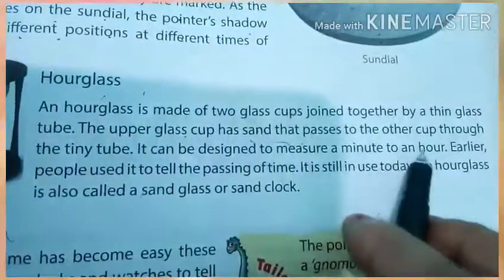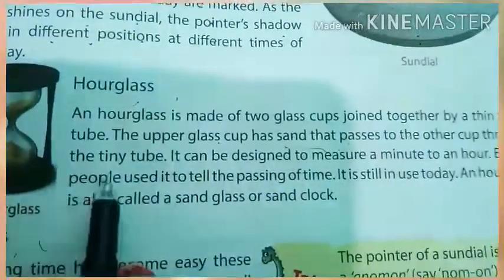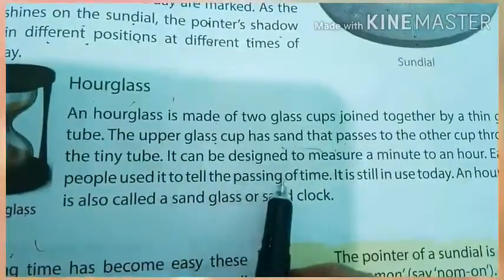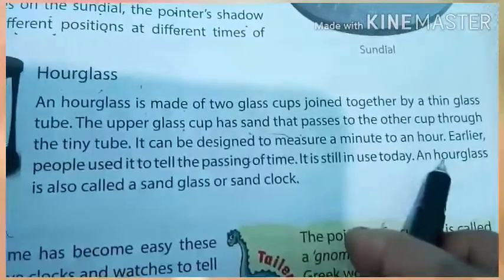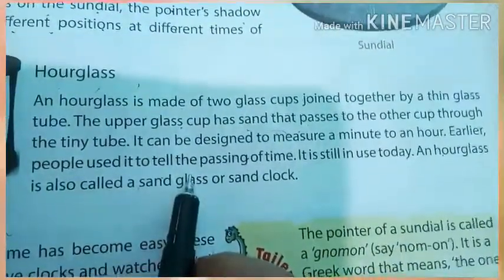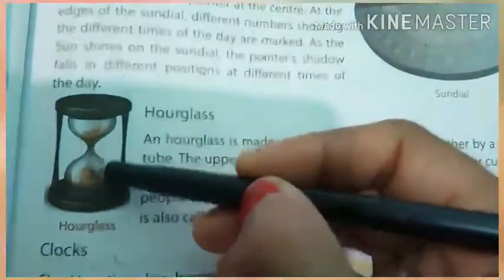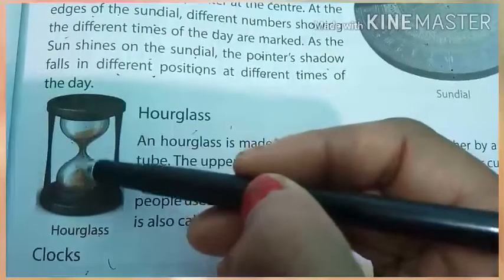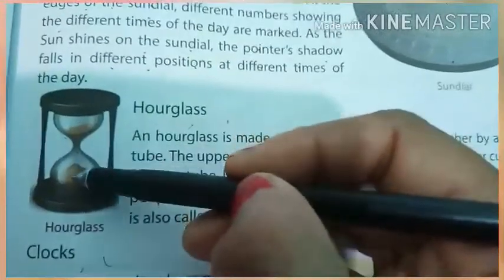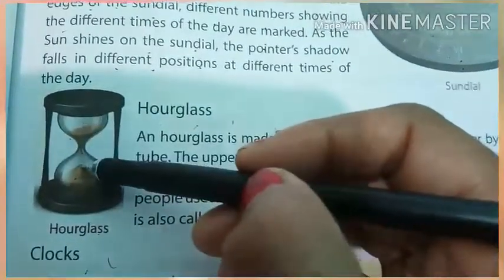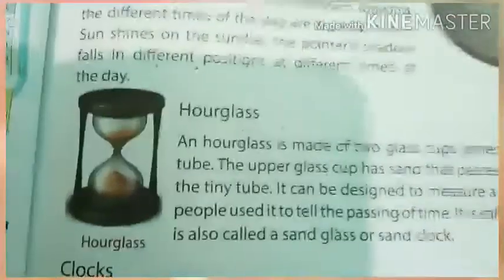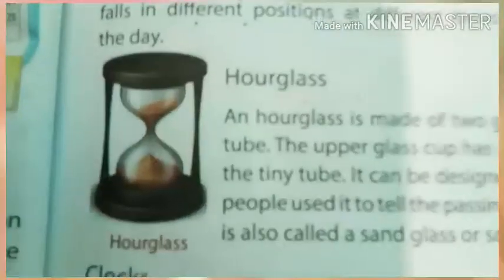It can be designed to measure a minute to an hour. Earlier, people used it to tell the passing of time. It is still in use today. An hourglass is also called sand glass or sand clock. As the sand passes, people say time passed. See the picture carefully.